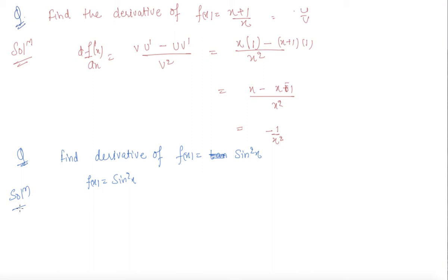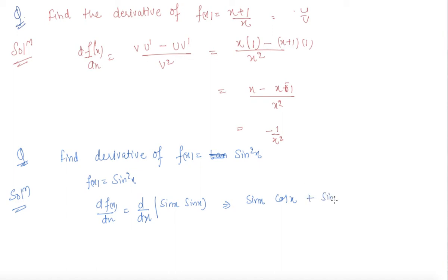Our function is sin²x, so I need to find d[f(x)]/dx = d/dx [sin x · sin x]. I apply the product rule: sin x · d/dx(sin x) + sin x · d/dx(sin x) = sin x · cos x + sin x · cos x = 2 sin x cos x, which equals sin 2x. So the derivative of sin²x is sin 2x.